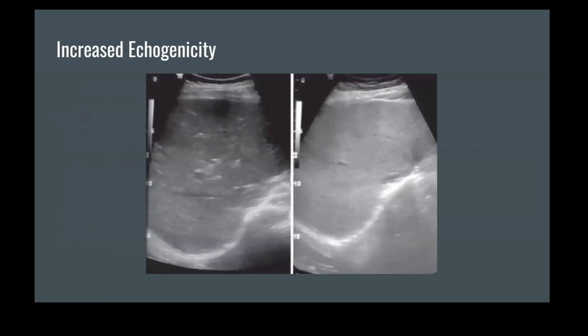Here we have an ultrasound image of the liver. On the left, we have a normal liver, and on the right, we have a fatty liver. As you can see, the right liver has higher echogenicity than the normal liver.